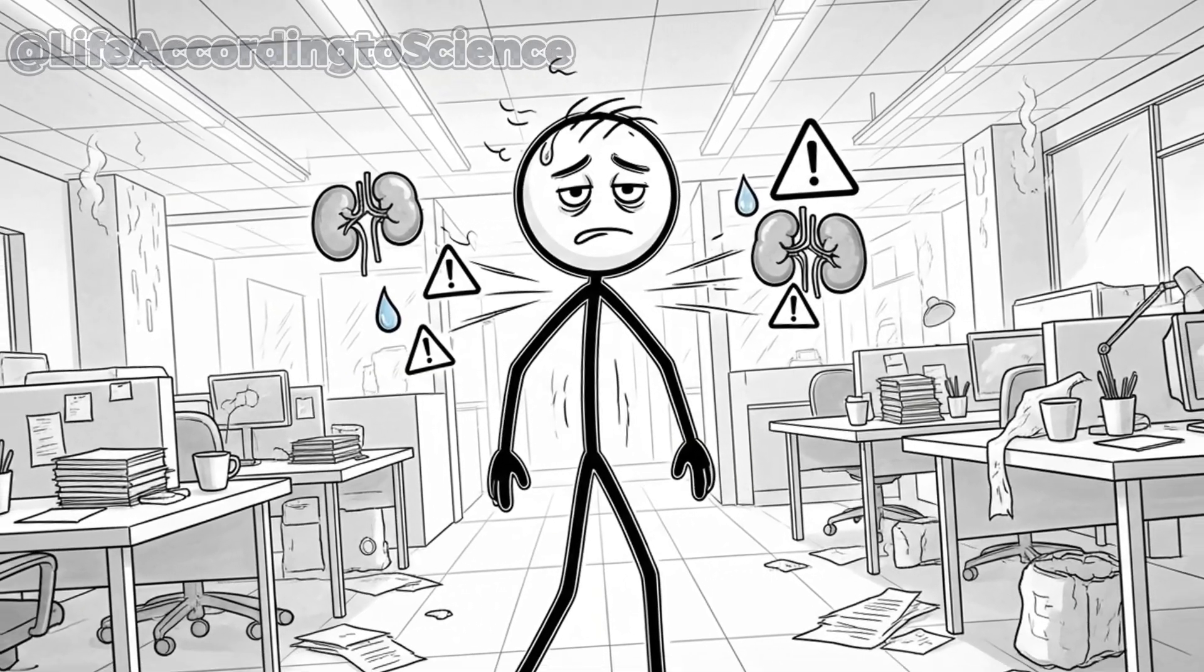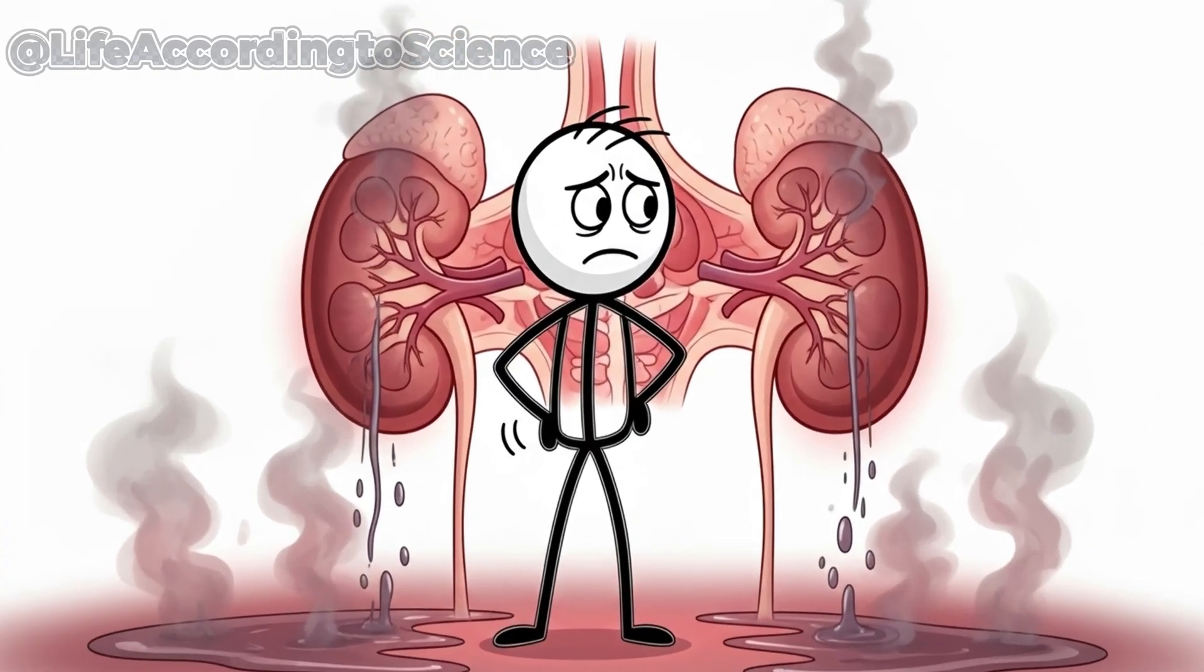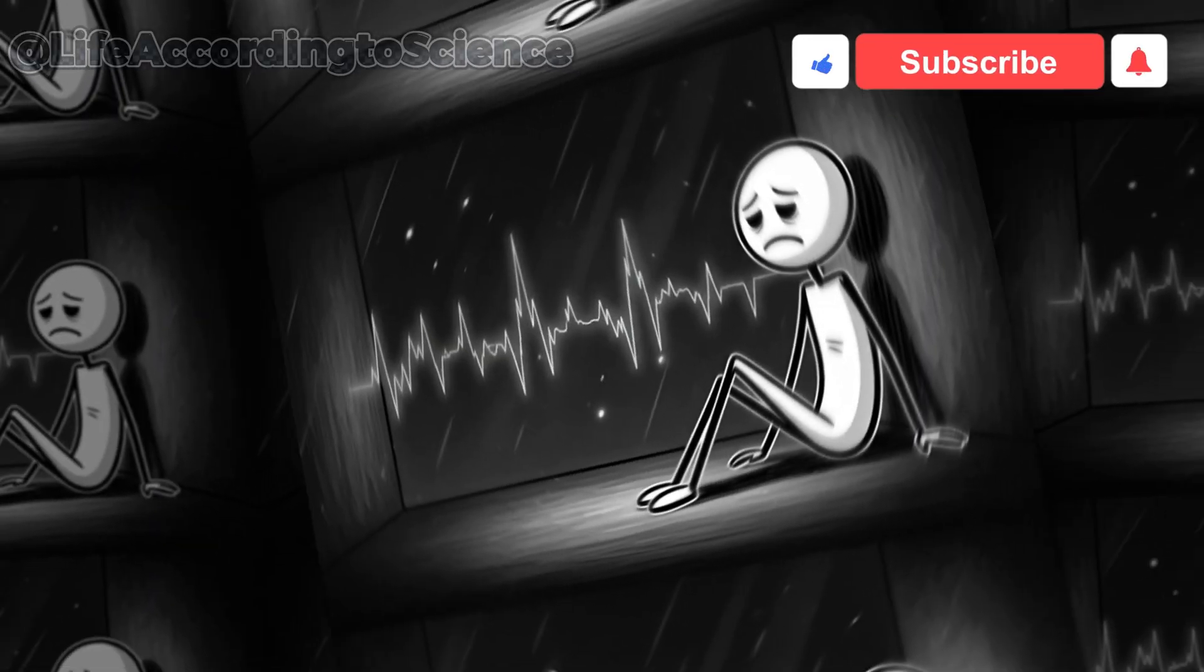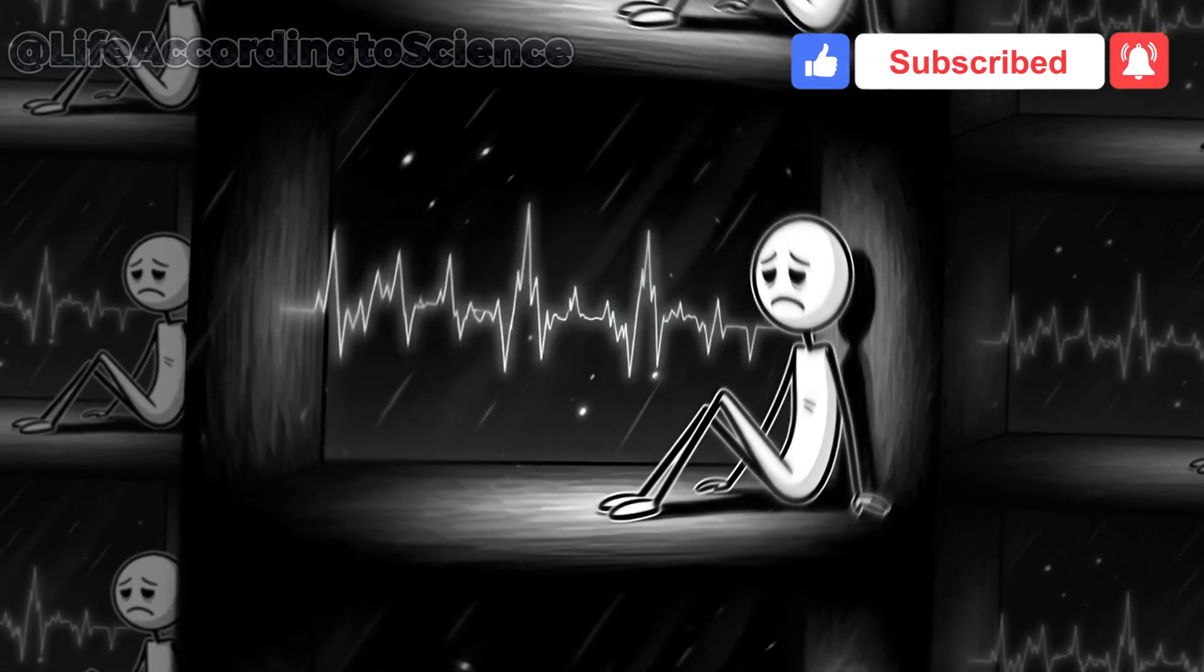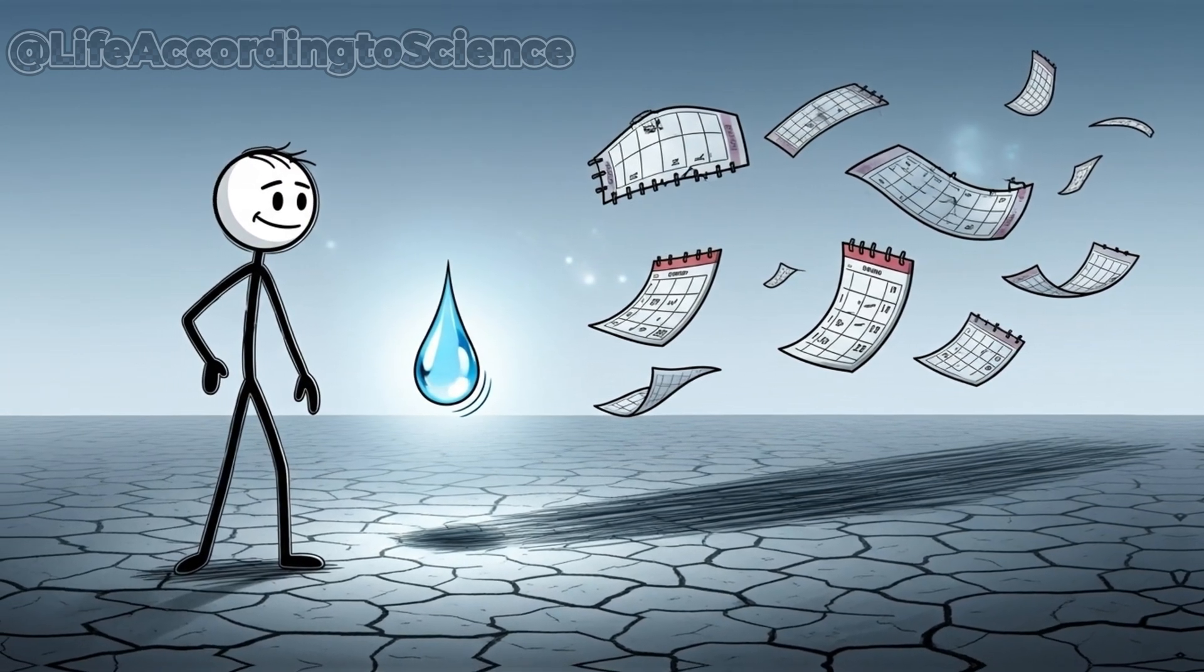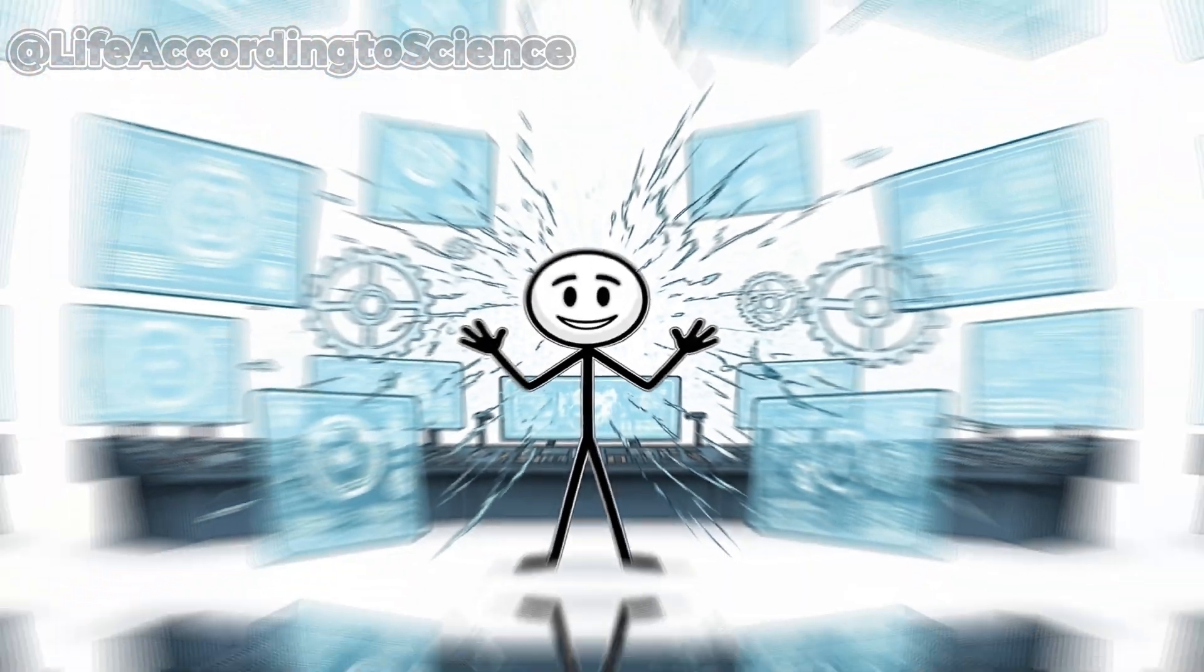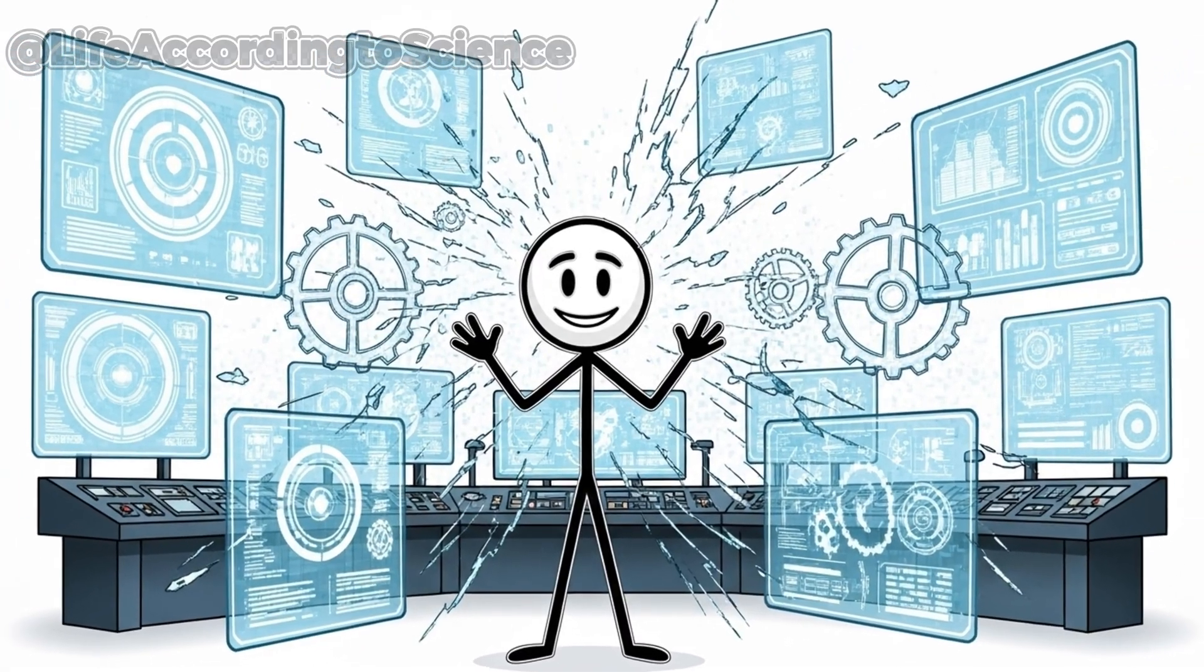Internally, your kidneys are under siege. They're filtering less blood, producing concentrated, dark urine. Toxins begin to accumulate. The fatigue you feel is no longer just tiredness—it's your body warning that critical systems are losing equilibrium. Day two is proof that water isn't optional. It's your body's operating system. Without it, everything begins to glitch.